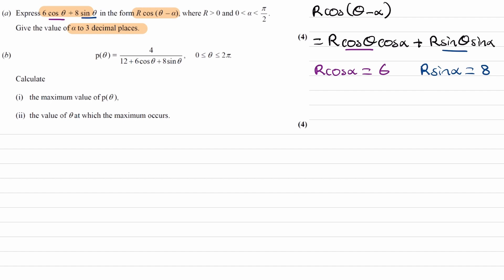We can then solve those two things simultaneously, so divide. r sin alpha over r cos alpha is equal to 8 over 3. r's cancel. We get tan alpha is 4 over 3. Inverse tan of 4 over 3 gives us 0.927.